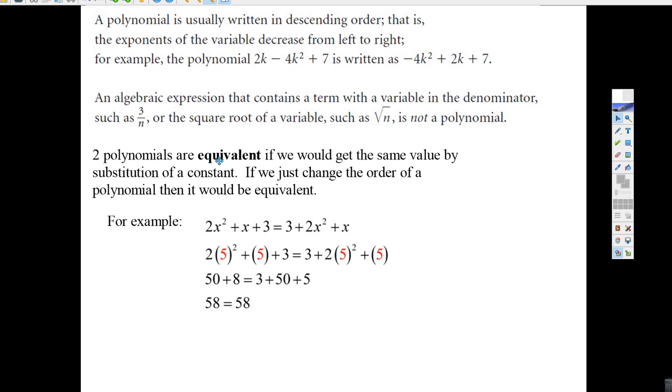And two polynomials are equivalent if we get exactly the same value by substitution. If we substitute in a number, we'd get the same answer. If we change the order of a polynomial, it still would be equivalent. Like this one, 2x squared plus x plus 3. What if we went 3 plus 2x squared plus x?